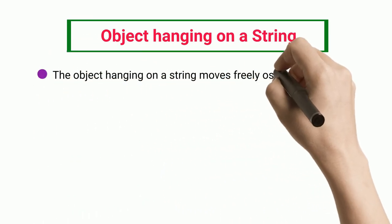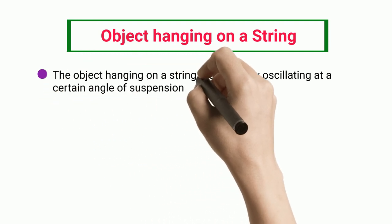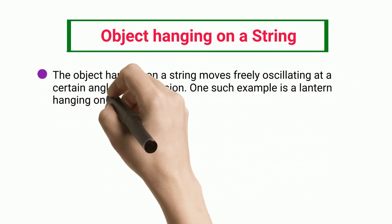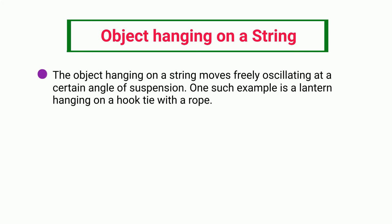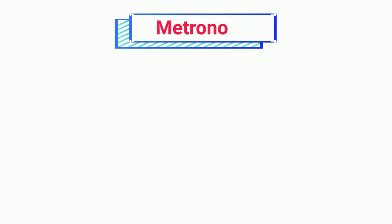Object Hanging on a String: The object hanging on a string moves freely, oscillating at a certain angle of suspension. One such example is a lantern hanging on a hook tied with a rope.